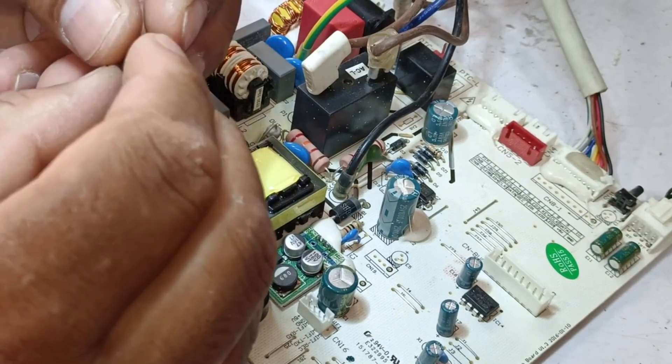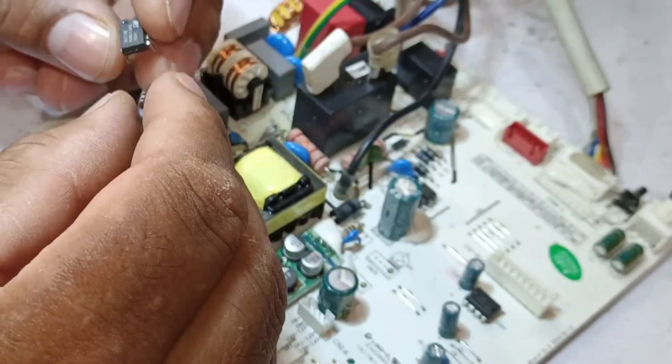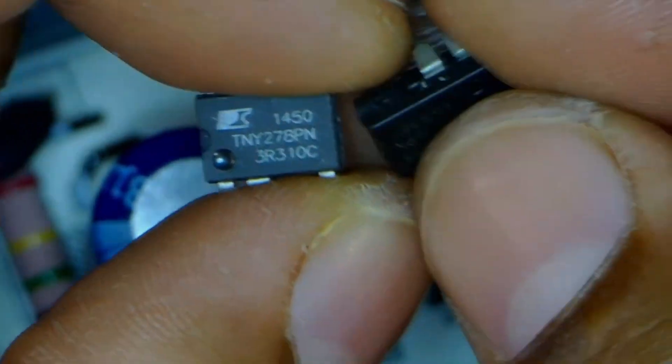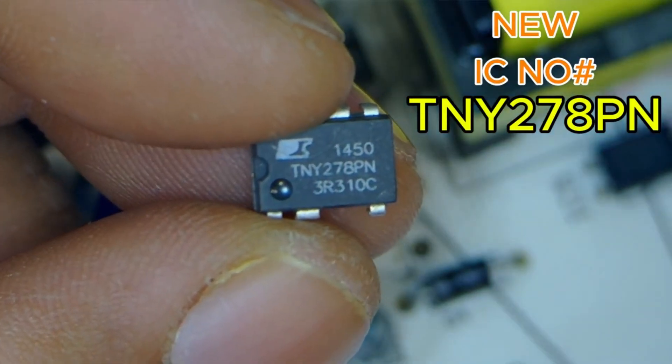We're going to install a new IC, but I'll tell you which one we'll use and what the difference will be. So here's the old IC that has burned out, but I will replace it with a TNY278PN. Now, what's the difference between the old and the new IC?